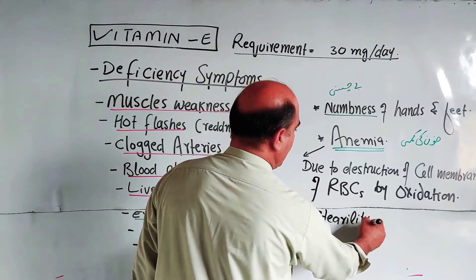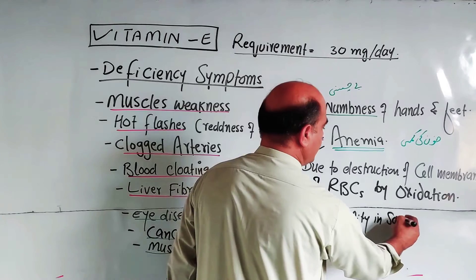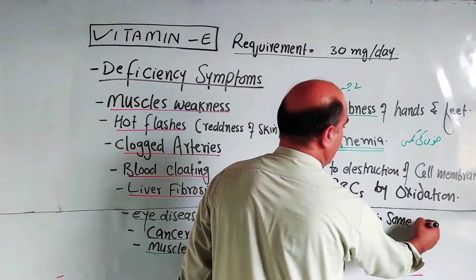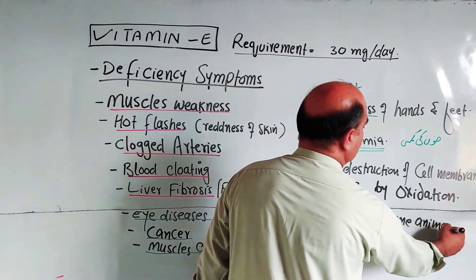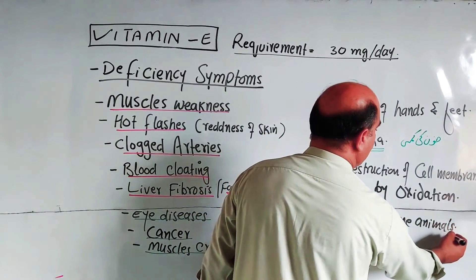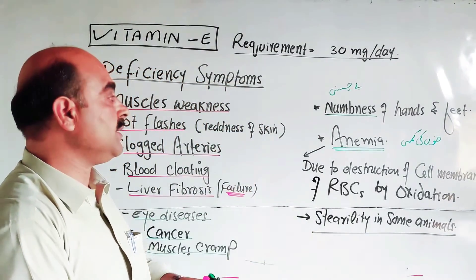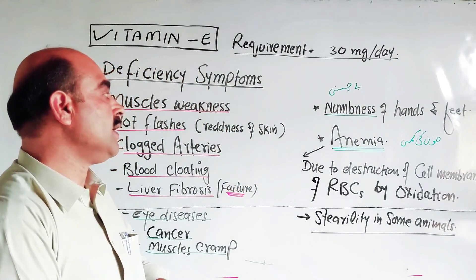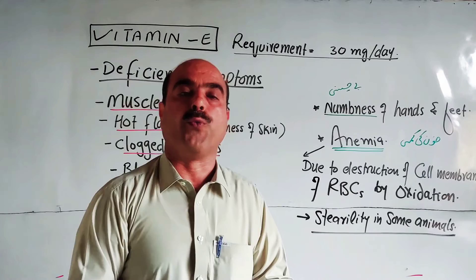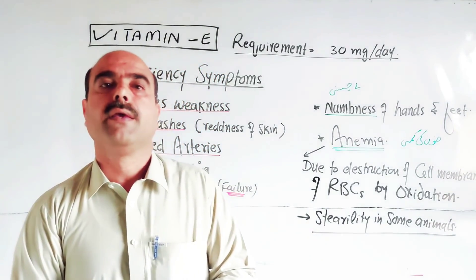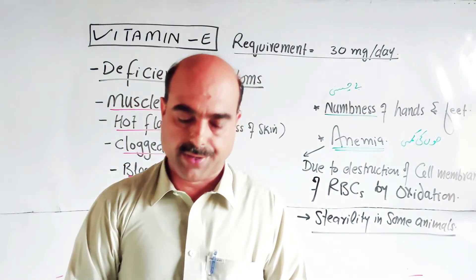Another deficiency symptom is sterility or infertility, known as banjpan, observed in some animals. These were all the important points about Vitamin E - its daily requirement, chemical formula, chemical name, main sources, main function as an antioxidant, and deficiency symptoms including anemia and sterility. Thanks a lot for watching the video.